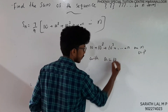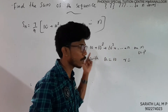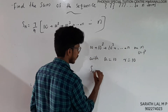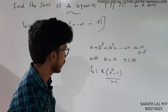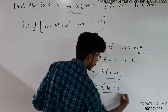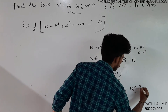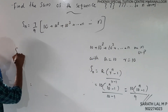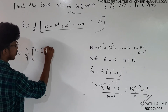The GP part has first term a equal to 10 and common ratio r equal to 10, since 10² divided by 10 equals 10, and 10³ divided by 10² equals 10. We apply the GP sum formula: S equals a into r raised to n minus 1, divided by r minus 1. That is 10 into 10 raised to n minus 1, divided by 9, which equals 10 raised to n plus 1 minus 10, all divided by 9.